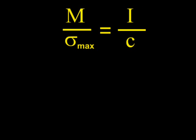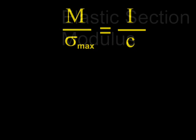Both I and C are properties of the beam cross-section. We must choose a beam that has a large enough ratio of I to C to match the ratio of moment to maximum stress. This ratio is called the elastic section modulus and is denoted by the letter S.